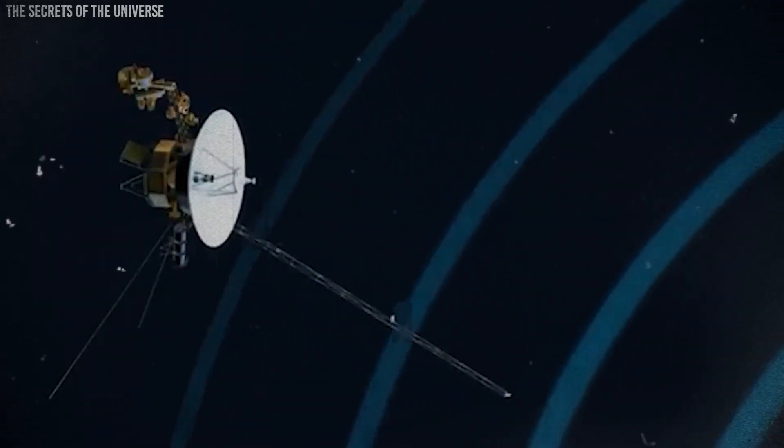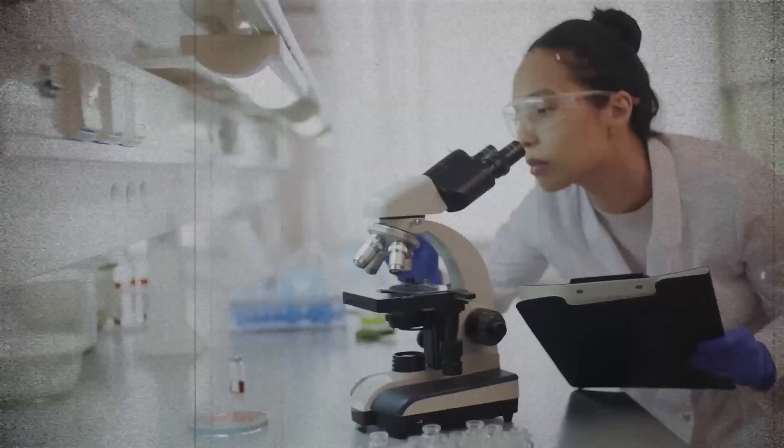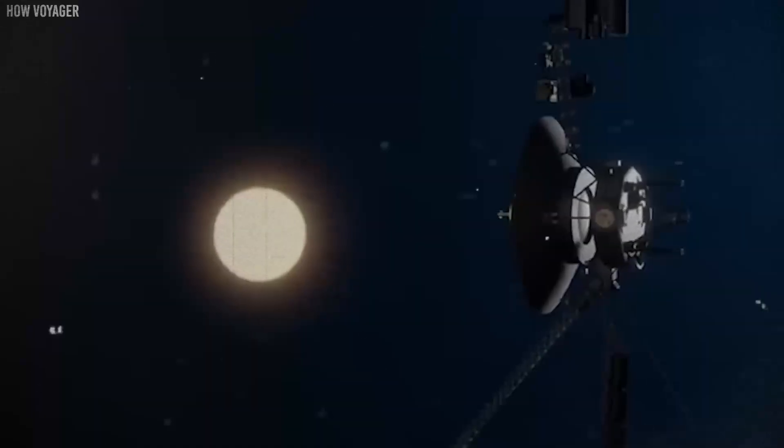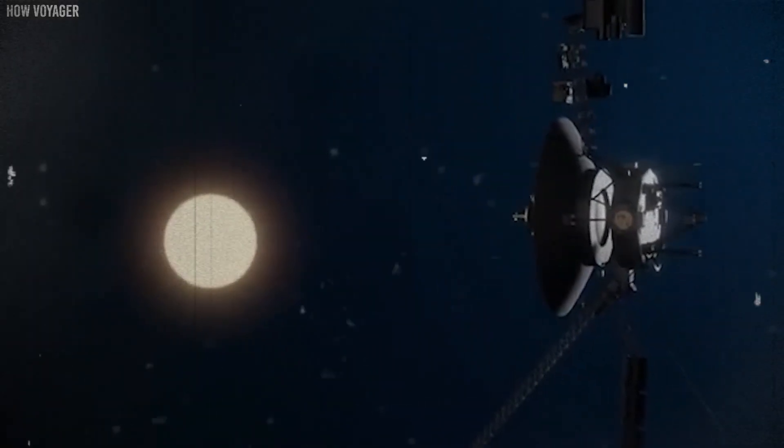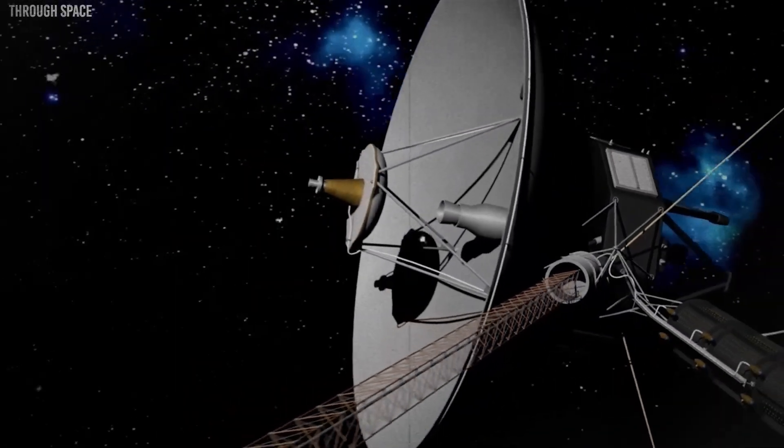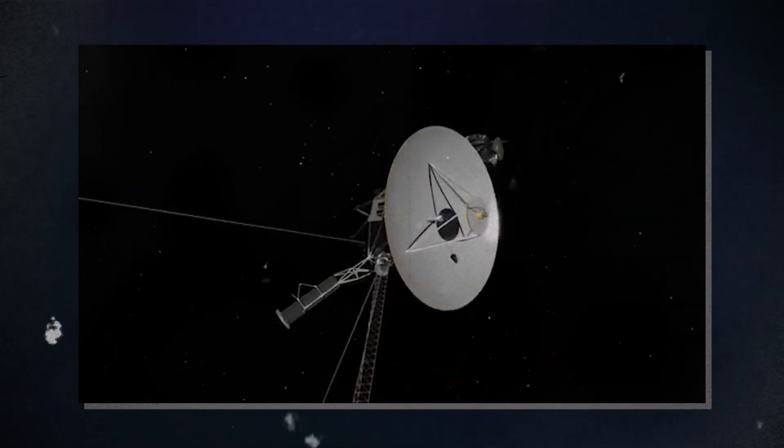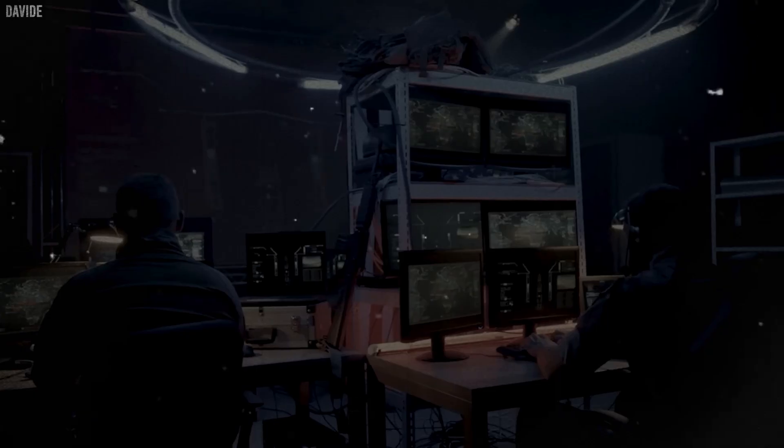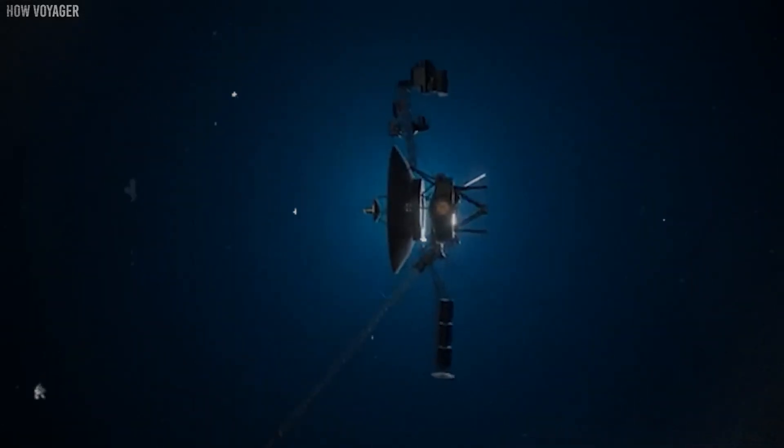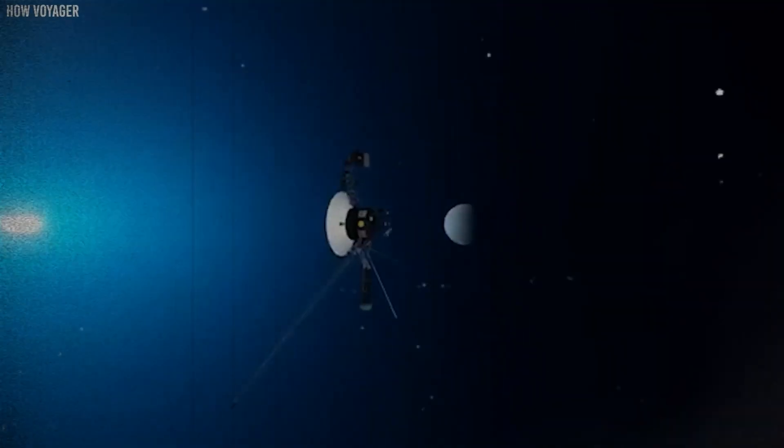Despite these challenges, both Voyagers continue their journey and maintain communication with Earth. However, as they get farther away, signal strength continues to decline. NASA expects that by 2036, communication will likely end. That means, we have at most about 10 years left to communicate with Voyager 1.